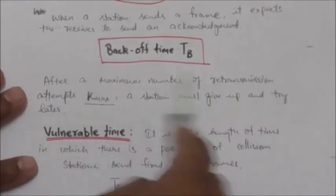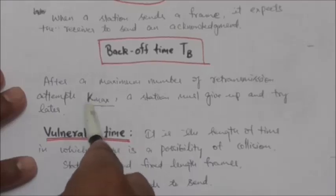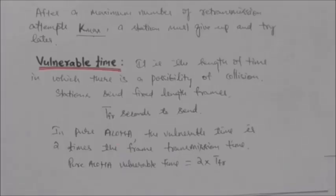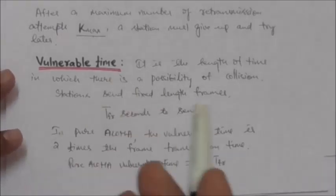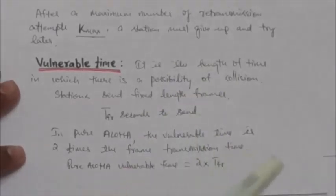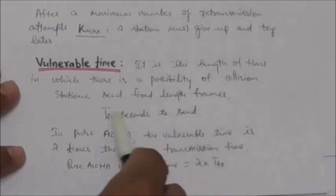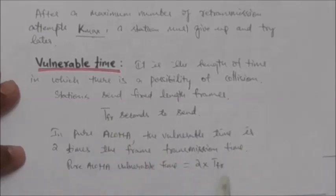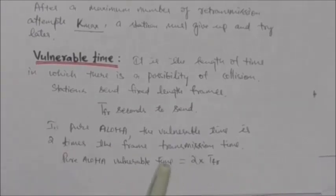After a maximum number of retransmission attempts, denoted by k_max, a station must give up and try later. Now regarding vulnerable time: the vulnerable time is the length of time during which there is a possibility of collision. Suppose stations send fixed-length frames and each frame takes T_fr seconds to send. In pure Aloha, the vulnerable time during which a collision may occur is two times the frame transmission time — that is, 2 × T_fr.